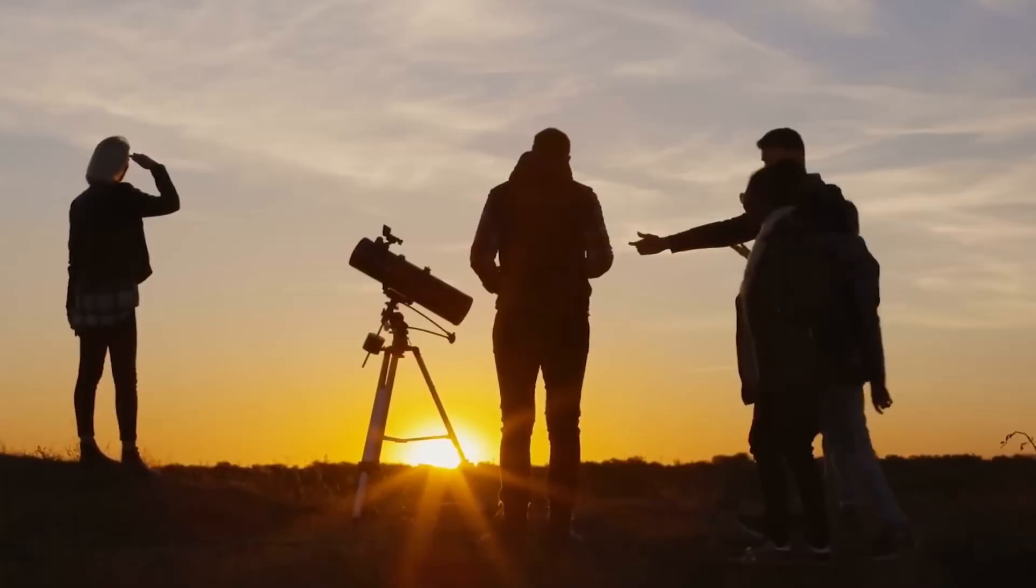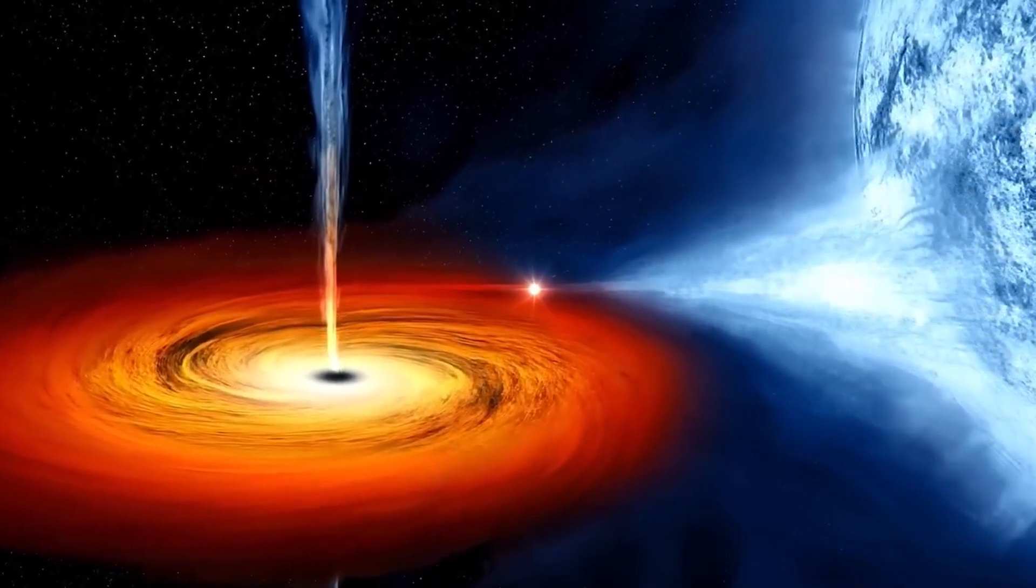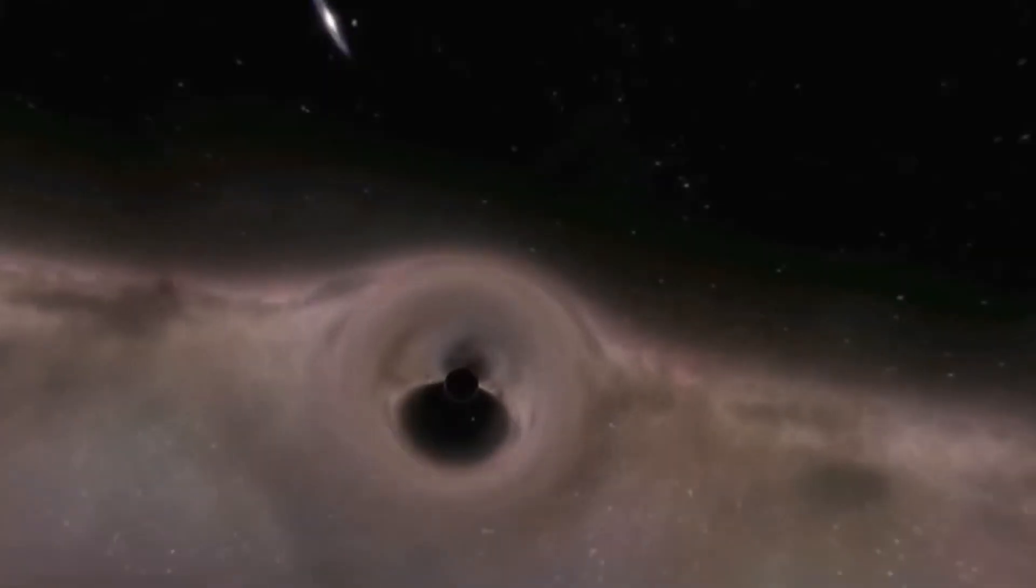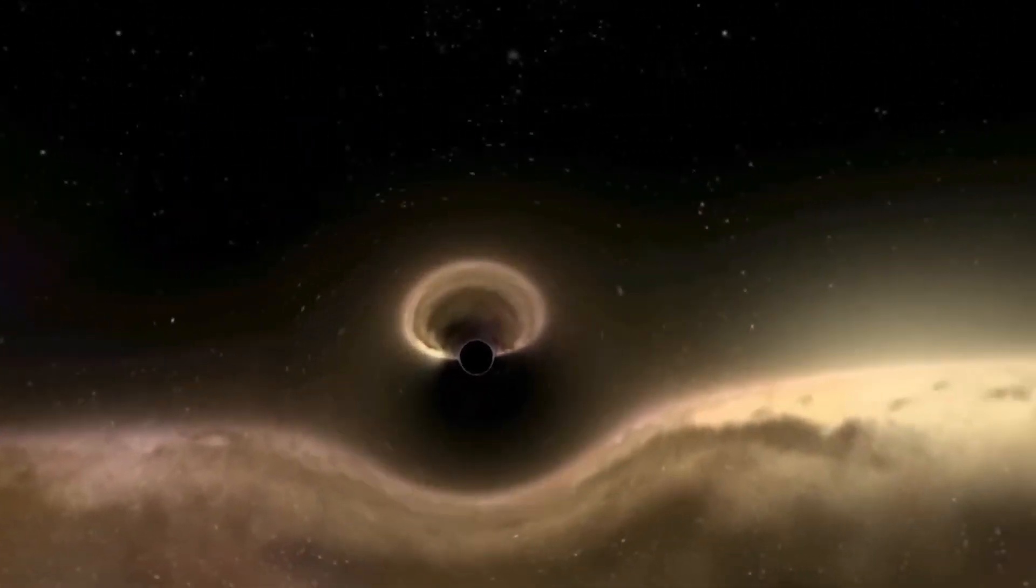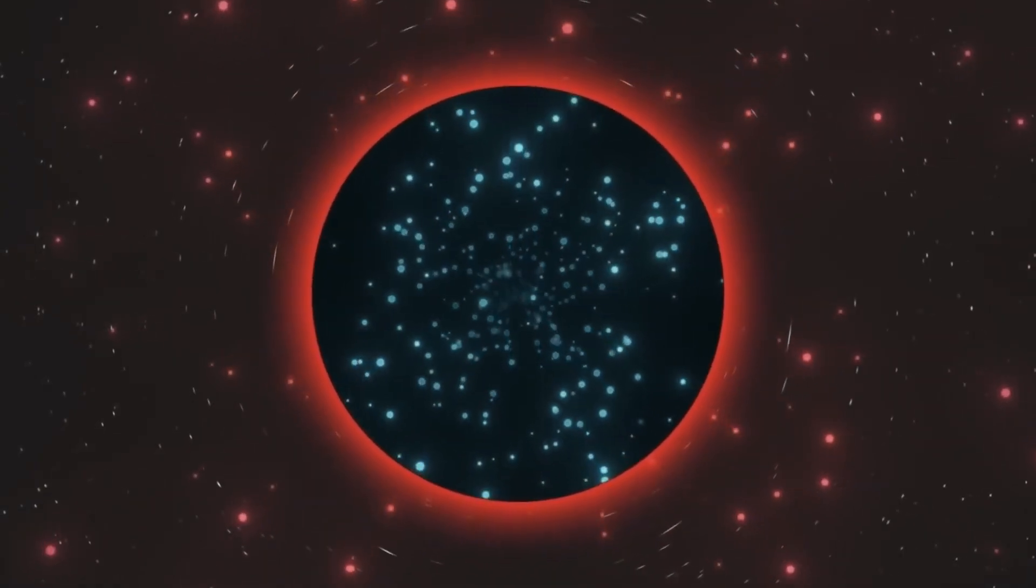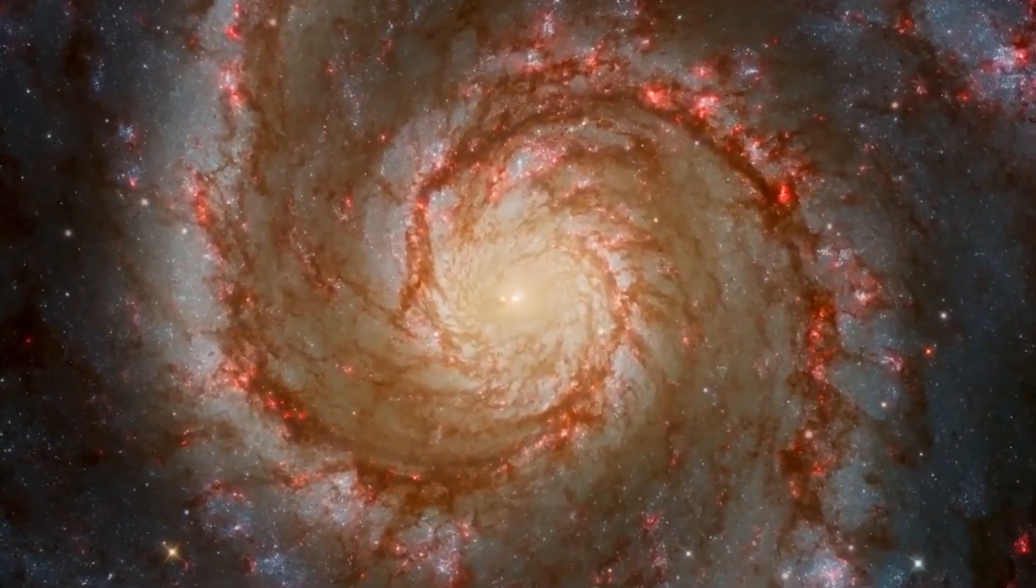Types of black holes. There are three main types of black holes: stellar, supermassive, and intermediate. Stellar black holes, born from collapsing massive stars, are small but incredibly dense. Supermassive black holes, found at the centers of galaxies, are giants, potentially formed by merging smaller black holes or collapsing gas clouds.